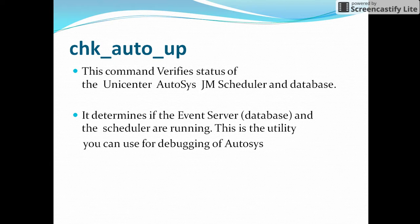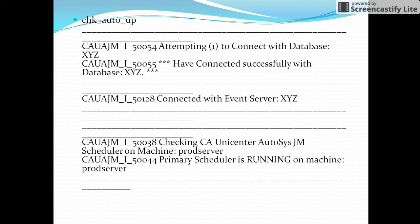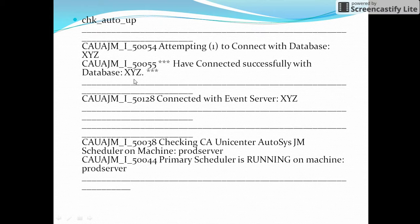We will learn with an example. Here the Autosys server is the prod server. Once we give the command check_auto_up, it will check for the database connectivity. If it is connected successfully to the database, it will display a message like 'connected successfully with database', followed by the database name.